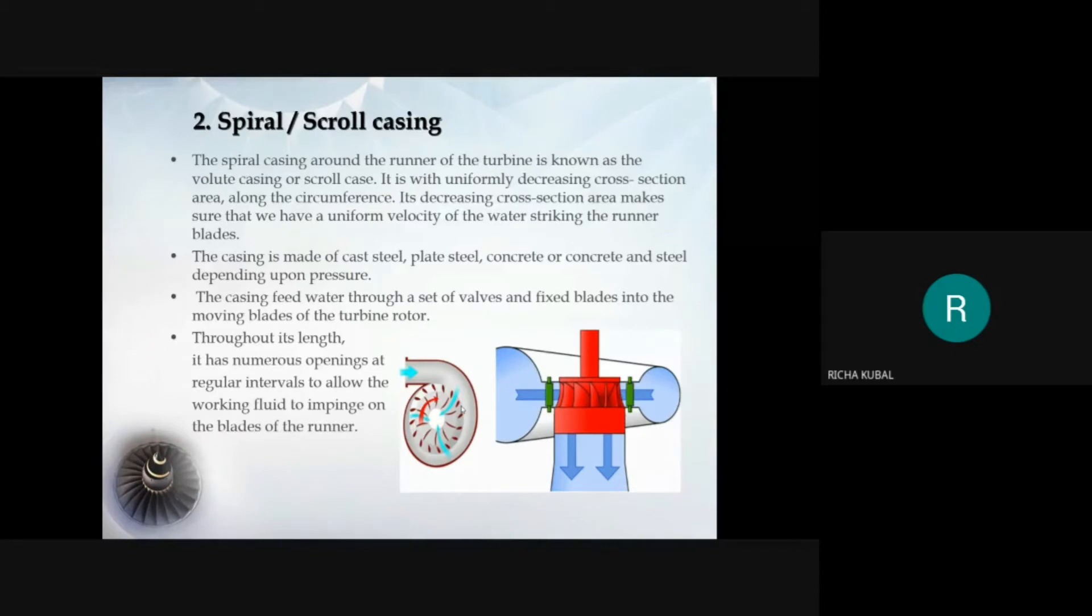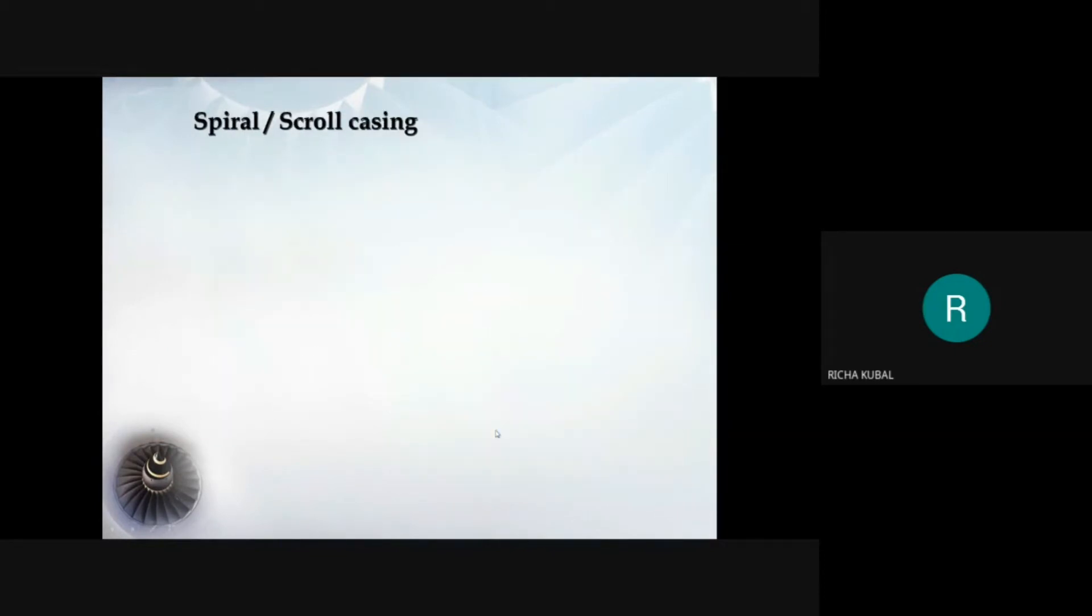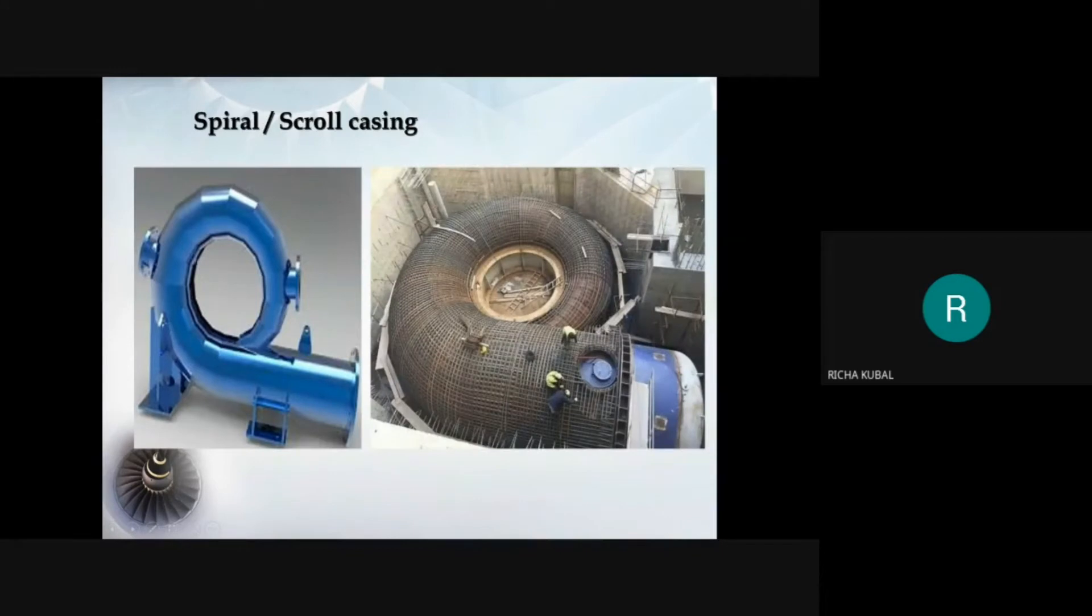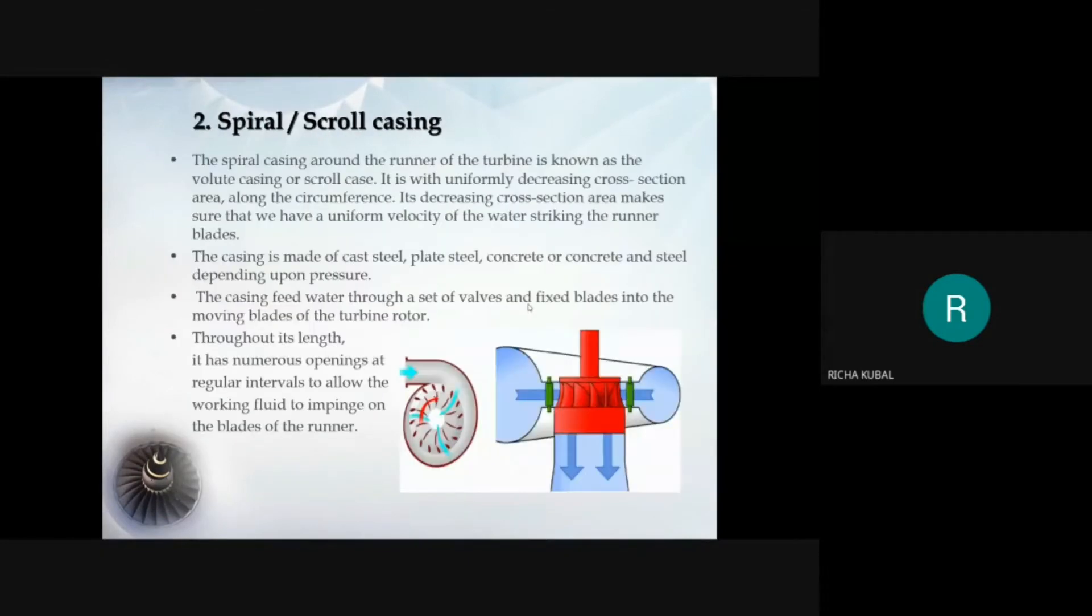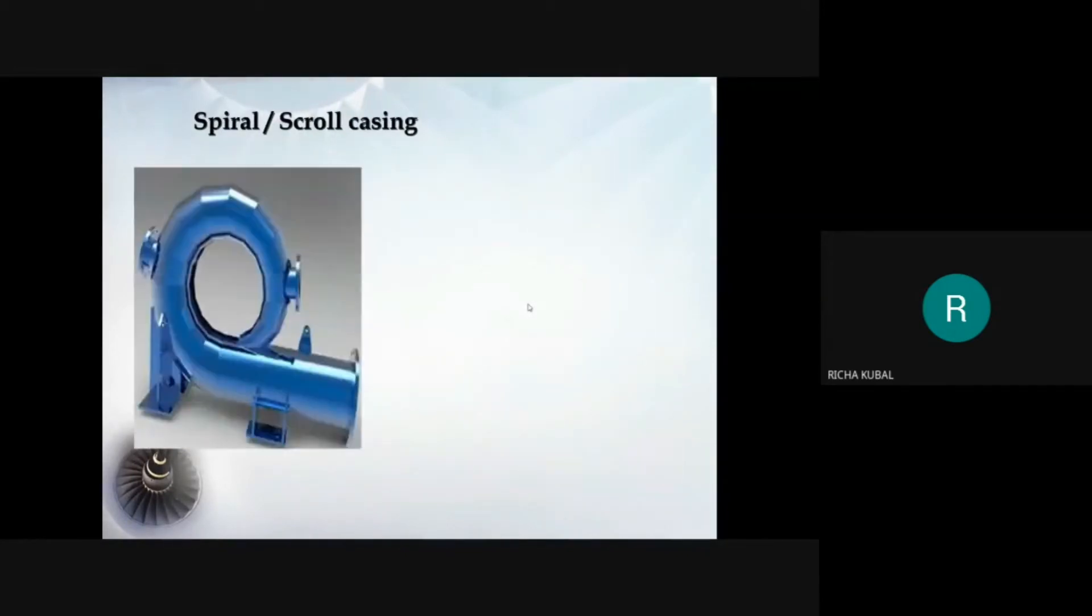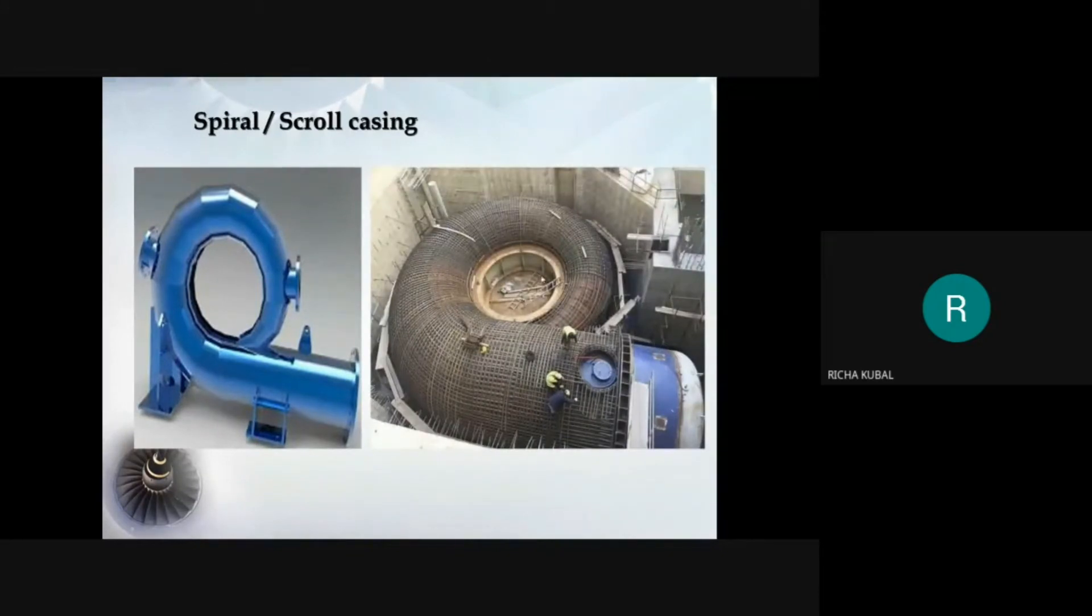The casing has numerous openings throughout the length at regular intervals to allow the water to strike on the blade of the runner. The opening converts pressure energy of fluid into kinetic energy, thus water strikes on the blade and also maintains constant velocity of fluid.